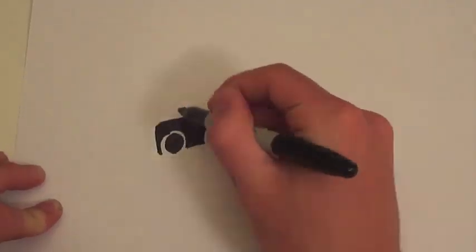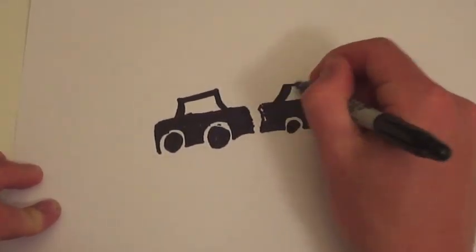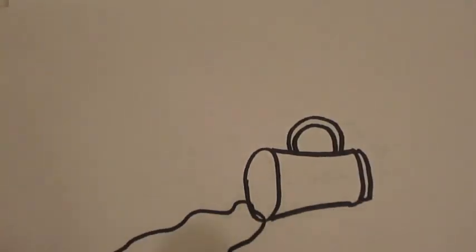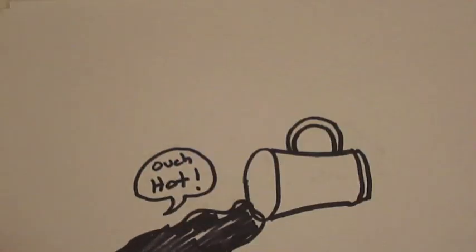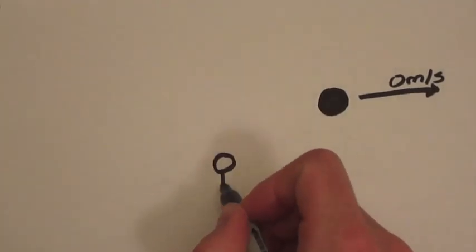Inertia is the explanation for why people can be ejected from cars in car crashes, why hot coffee can spill when you slam on your brakes, and why this ball will not move unless thrown by an outside force.